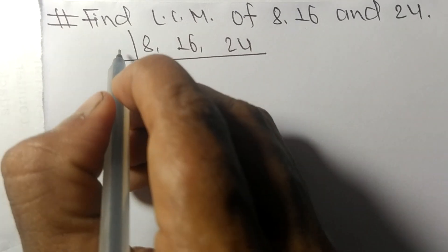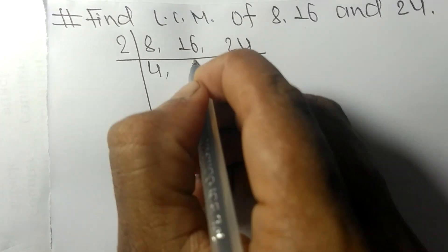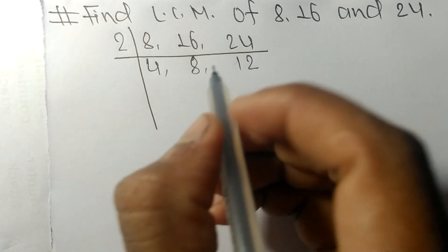These all numbers are divisible by 2. 2 times 4 means 8, 2 times 8 means 16, 2 times 12 means 24.